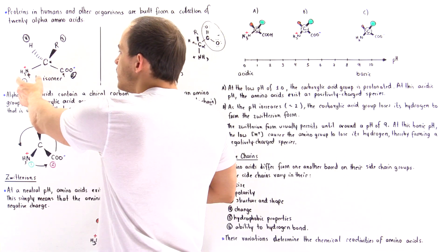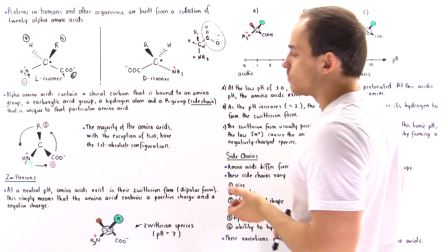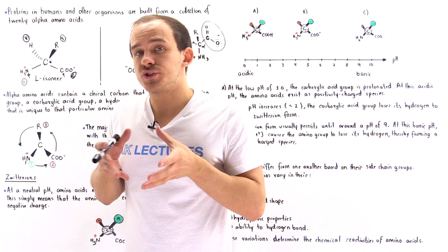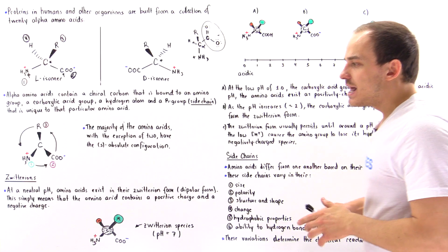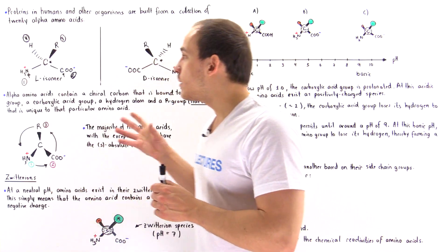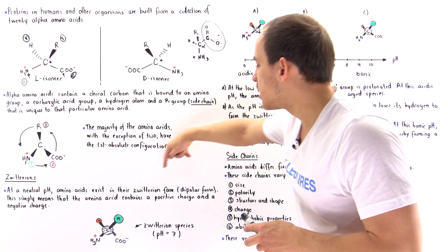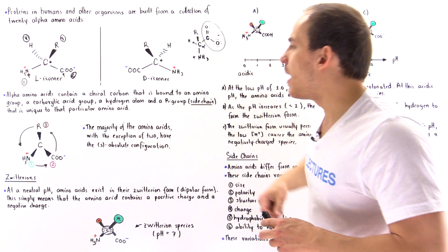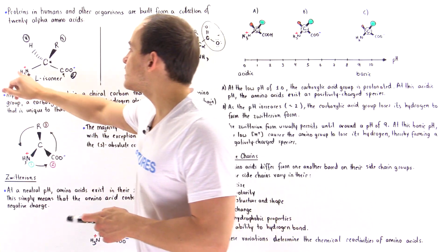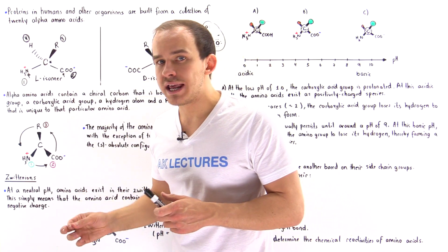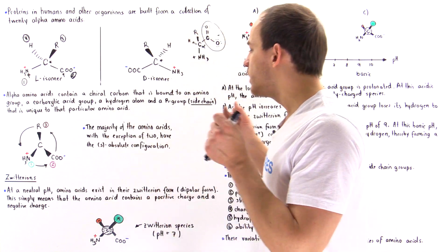Earlier I mentioned that the amino group is protonated and the carboxylic acid group is deprotonated. The pH of the solution determines whether these groups are protonated or deprotonated. At a neutral pH of around seven, amino acids exist predominantly in their dipolar form, also known as the zwitterion form, where the amino group carries a full positive charge and the carboxylic acid group carries a full negative charge.